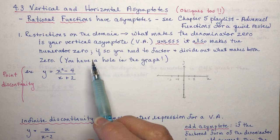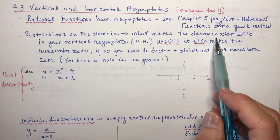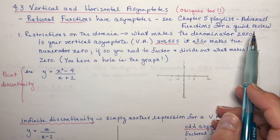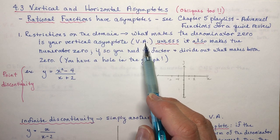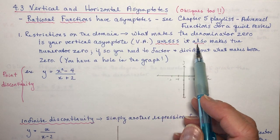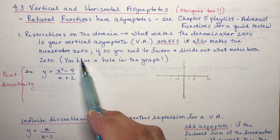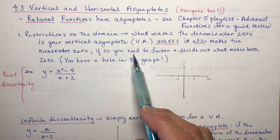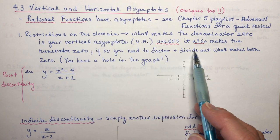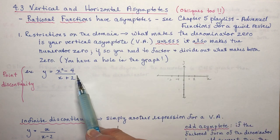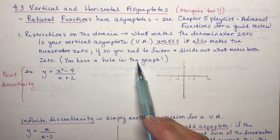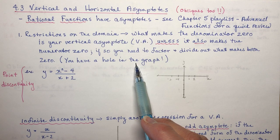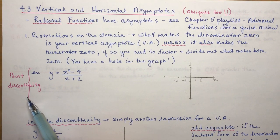The first thing: restrictions on the domain. What makes the denominator 0 is your vertical asymptote — we'll call them VAs — unless it also makes the numerator 0. If so, you need to factor and divide out what makes both 0, and you have a hole in the graph at that point rather than a vertical asymptote.